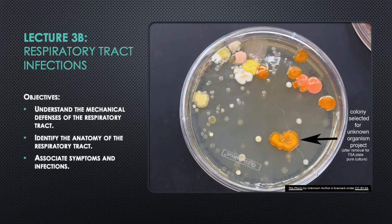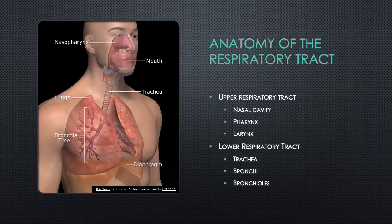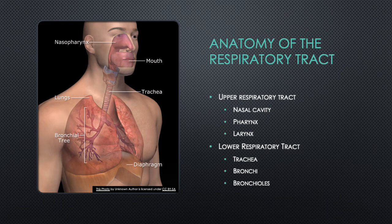That concludes part one on normal flora. Part two of this lecture focuses on respiratory tract infections. We want to understand the mechanical defenses of the respiratory tract, identify its anatomy, and associate symptoms with infections. The respiratory tract is generally divided into the upper respiratory tract — nasal cavity, pharynx, and larynx — and the lower respiratory tract — trachea, bronchi, and bronchioles. Diseases are similarly divided into upper and lower respiratory tract infections.